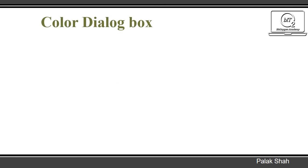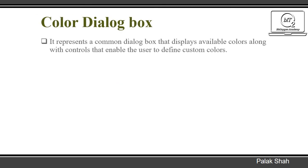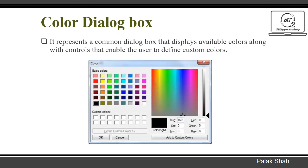Color Dialog Box. It represents a common dialog box that displays available colors along with controls that enable the user to define custom colors. Here we can see the image of the color dialog box. If the user wants to change the color of any data, they select the color dialog box.